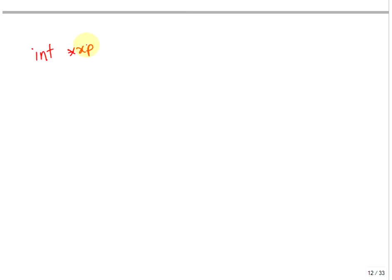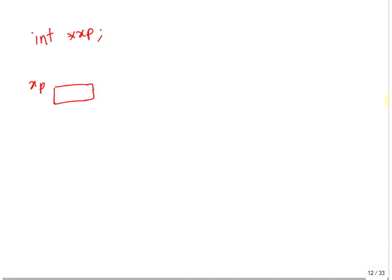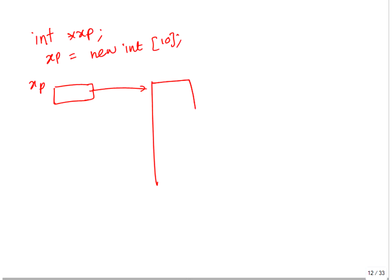Let's say that's an integer pointer — integer pointer xp. What it is, is you have a pointer and memory locations to store the pointer. So that's xp. Now let's say we have allocated some memory. How do you allocate memory? xp equal to new int 10, something like that. So here xp is pointing to heap memory — 10 integers. Remember the integer is typically 4 bytes in most languages nowadays, so each box is 4 bytes.